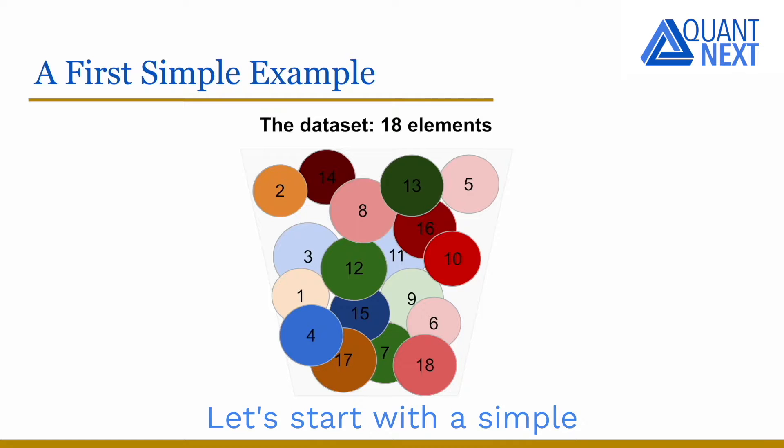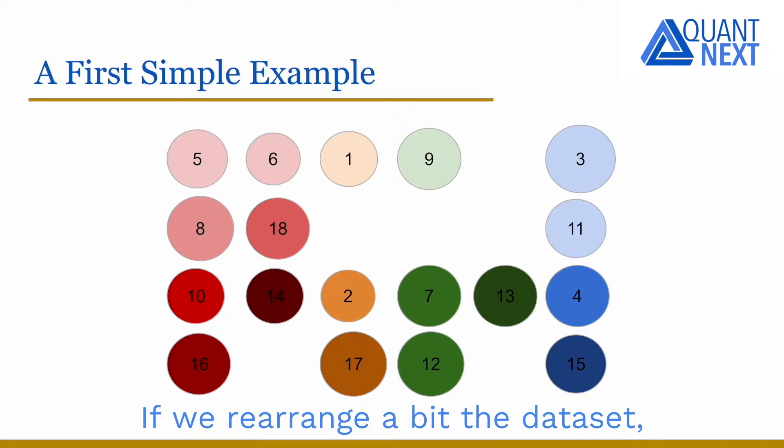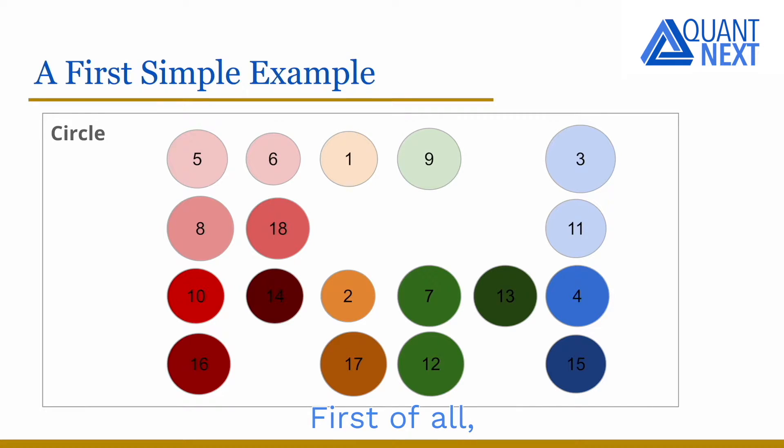Let's start with a simple illustrative example. We consider a dataset composed of 18 elements in a box. If we rearrange a bit the dataset, we identify several common characteristics. First of all, all shapes are circles with quite similar sizes.